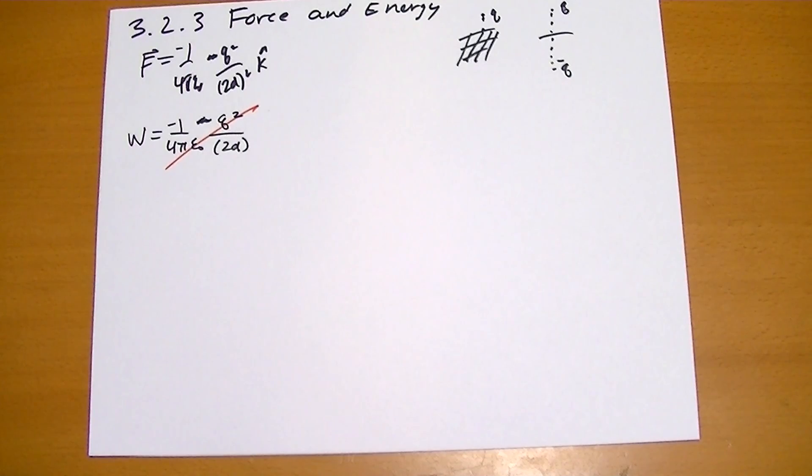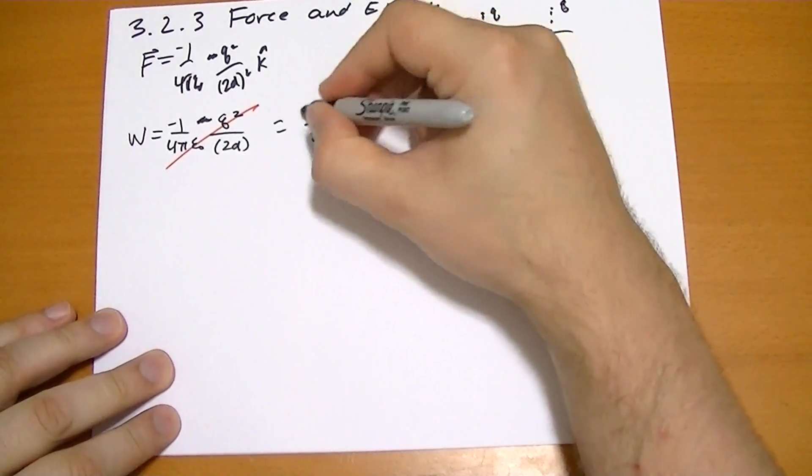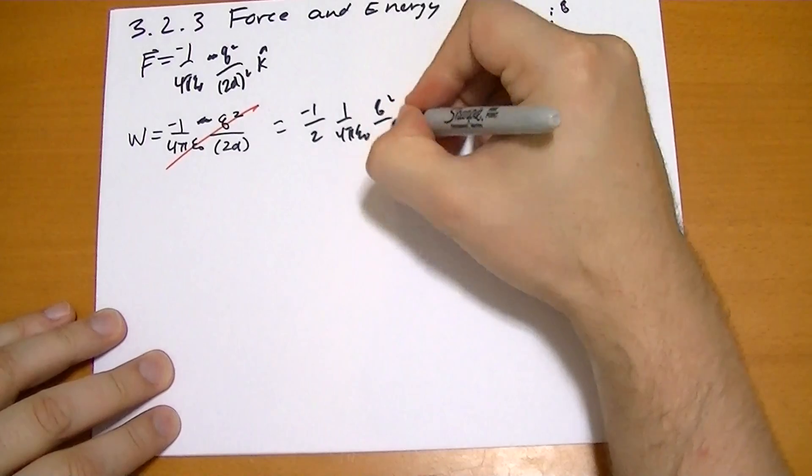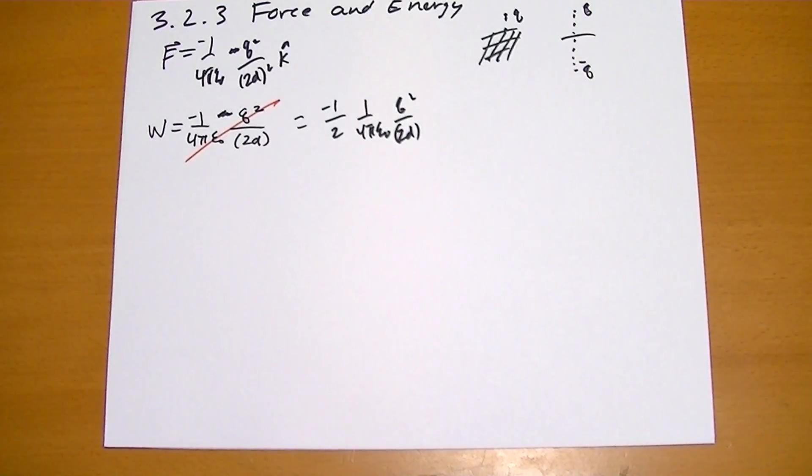So the real work to assemble the charges is really equal to 1 over, 1 half, well negative 1 half, of 1 over 4 pi, epsilon naught, q squared over 2d. Why 1 half?